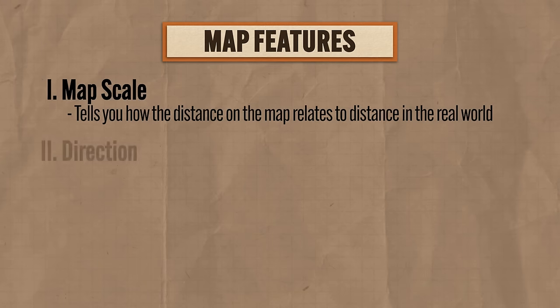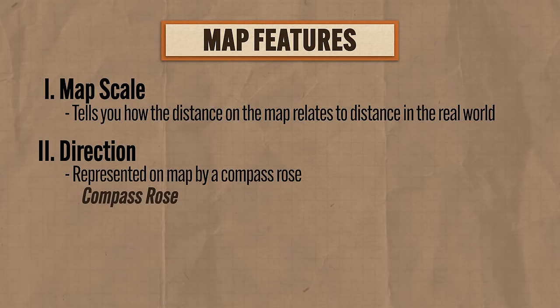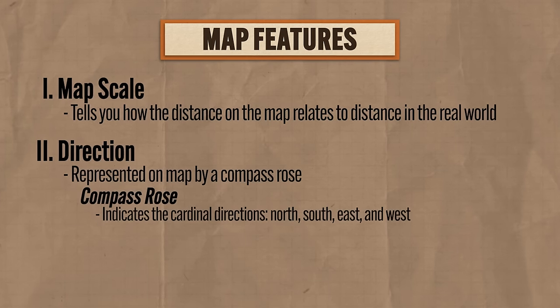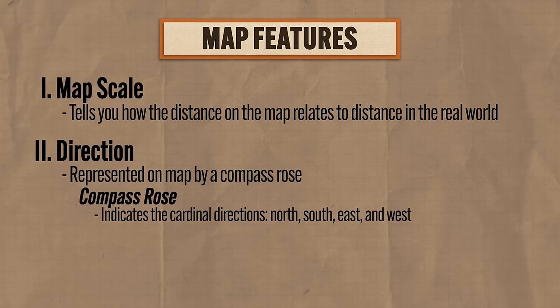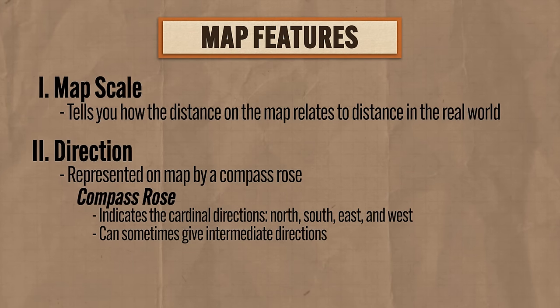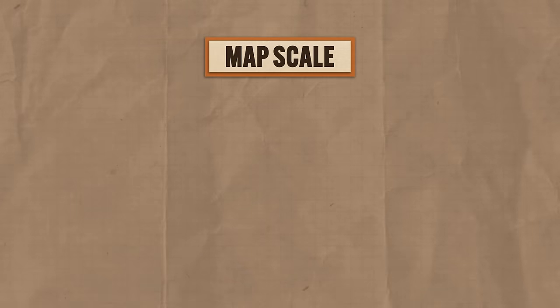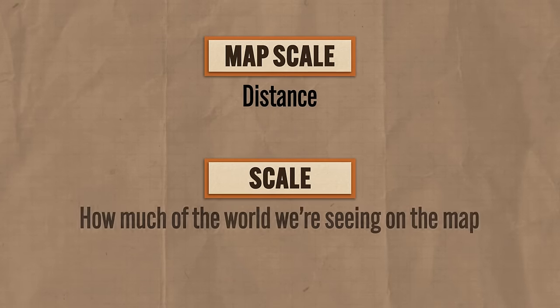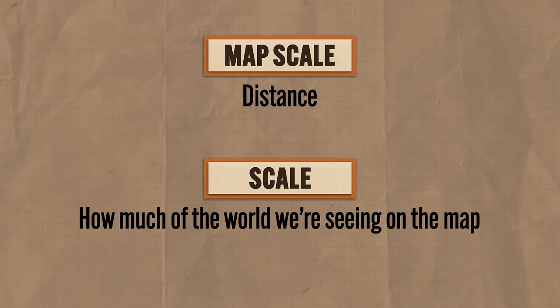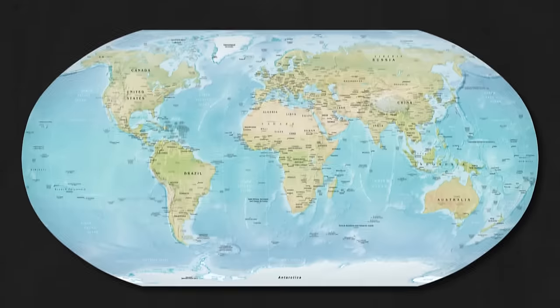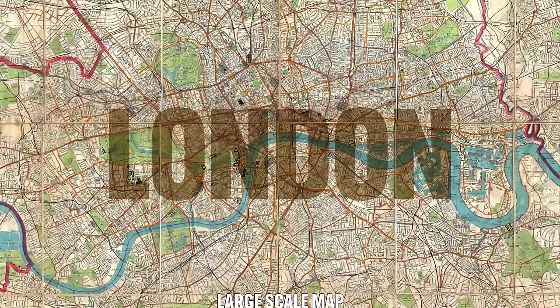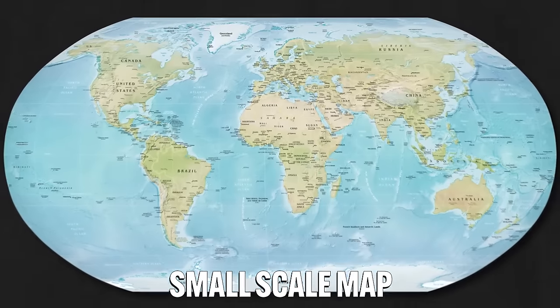Second, maps include some way to reckon direction, and usually this is represented by a compass rose, which indicates the cardinal directions — north, south, east, and west. Or if the compass rose is a little spicier, it might give you intermediate directions as well. Third, maps depict the Earth's surface at various scales. Now, a map's scale tells us about distance, but the scale of the map tells us how much of the world we're seeing. A large-scale map zooms into a particular area and has a lot more detail, but a small-scale map zooms out to a national or global scale and has less detail. So don't get those two confused.